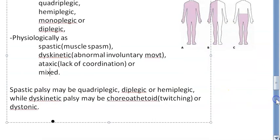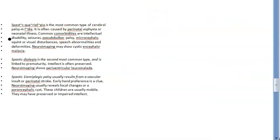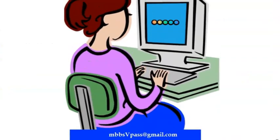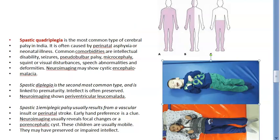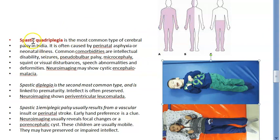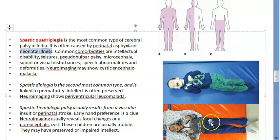Dyskinetic palsy may be choreoathetoid (twitching/writhing of muscles) or dystonic (involuntary contraction, repetitive or twisting movements). Now in detail: spastic quadriplegia means all four limbs are affected. This is the most common type of cerebral palsy in India. Causes include birth asphyxia, neonatal illness, and infection. Comorbidities include intellectual disability, seizures, pseudo-bulbar palsy, microcephaly, squint, visual disturbances, speech abnormalities, and deformities.